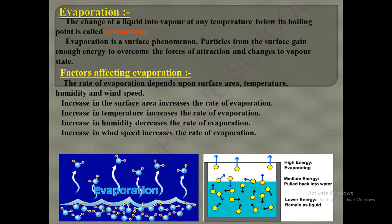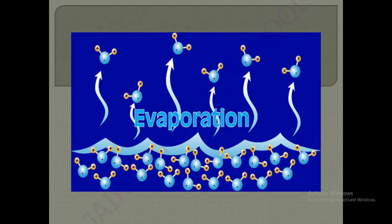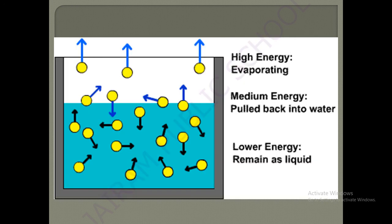An increase in wind speed increases the rate of evaporation — if wind speed is very high, evaporation rate is also very high. Here is the pictorial representation of evaporation. Evaporation takes place on the surface, which is why it is called a surface phenomenon. High-energy evaporating molecules are present on the surface, medium-energy molecules are in the middle, and the lower portion remains as liquid.